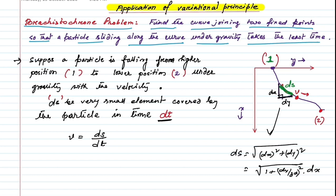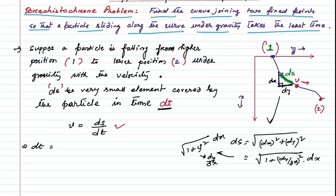Here dy/dx can be denoted as ẏ (y-dot), so (dy/dx)² becomes ẏ². From the relation V = DS/DT, we find DT = DS/V, since we want to find the path that takes minimum time.